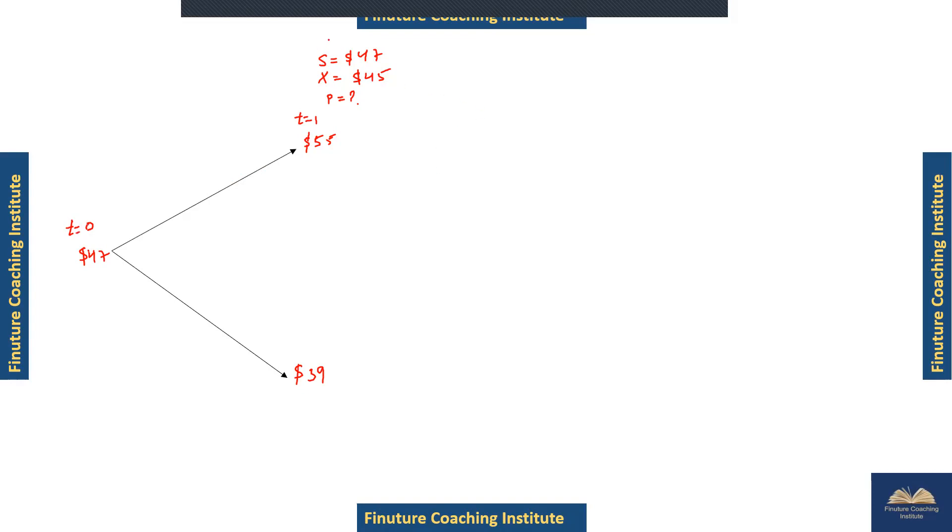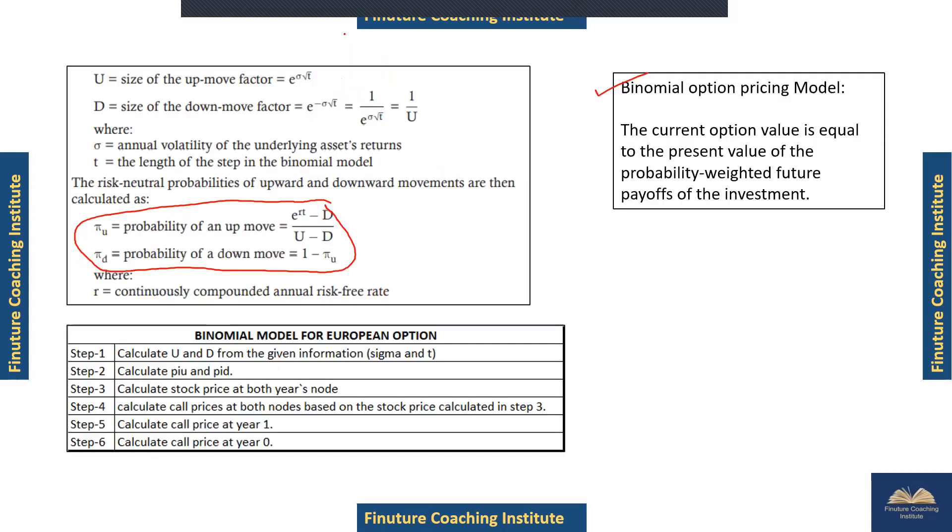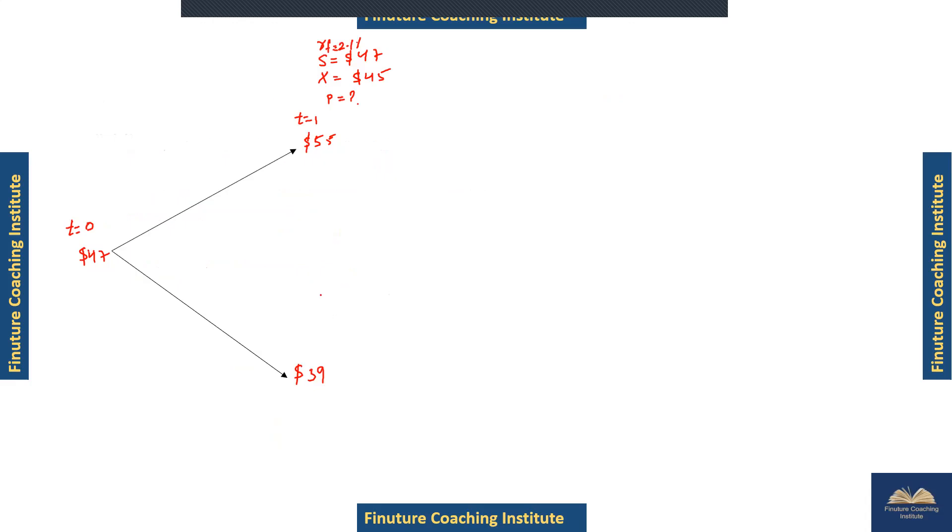We have the risk-free rate as 2.1%, and make a note that in binomial option pricing it's a continuously compounded annual risk-free rate. Now we'll calculate the probabilities so we can calculate the put option value, then discount back from t=1 to t=0.